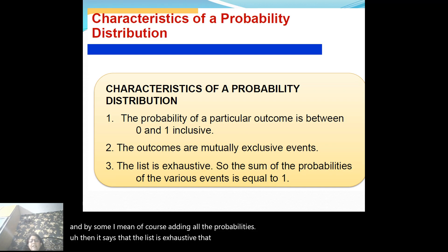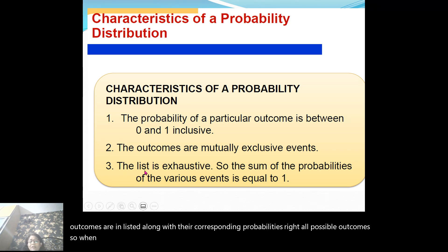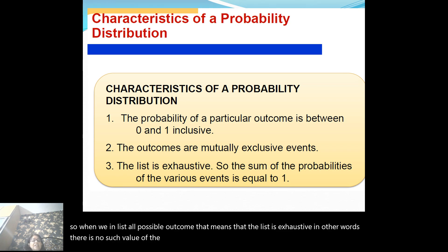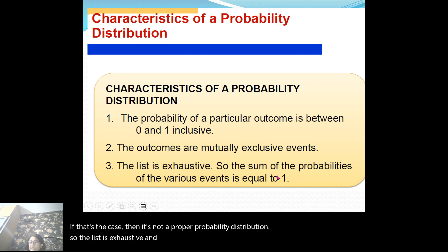The list is exhaustive, meaning that in a probability distribution, all possible outcomes are enlisted along with their corresponding probabilities. When we enlist all possible outcomes, the list is exhaustive — there is no value of the random variable that is possible but hasn't been listed in the table. If that's the case, it's not a proper probability distribution. So the list is exhaustive and the sum of the probabilities is one.